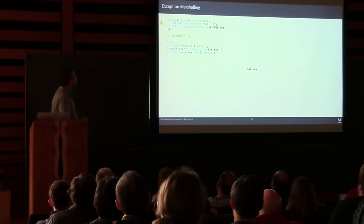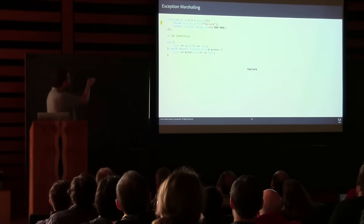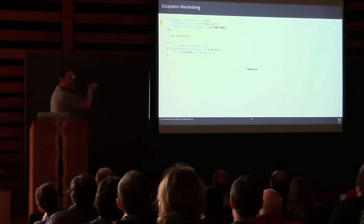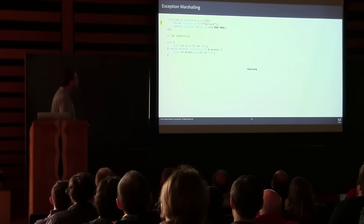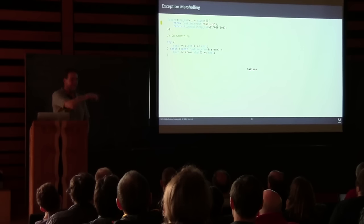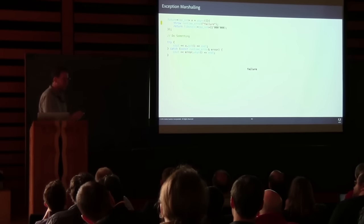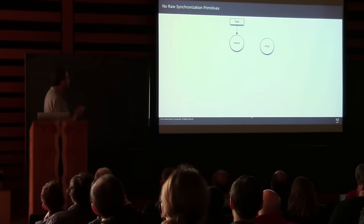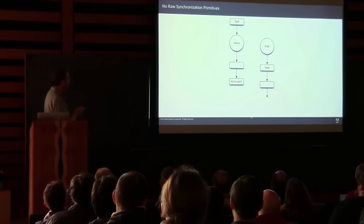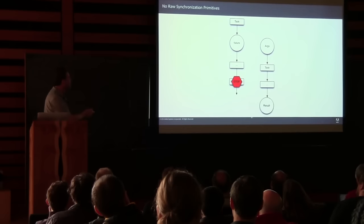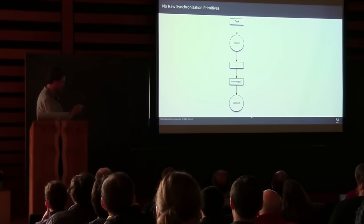Futures can also propagate exceptions. If an exception is thrown on a thread, when you try to get the value from your future it will re-throw that error, even though it was thrown on another thread. But then we call .get and we stop — and I don't like to stop.